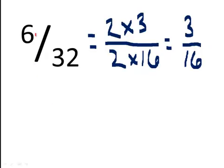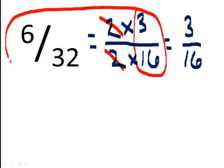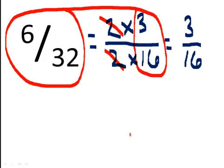Let's see how you did. We can factor 6 as 2 times 3, and we can factor 32 as 2 times 16. This 2 cancels with that 2, and that leaves us with 3 sixteenths left over. So 3 sixteenths and 6 thirty-seconds are equivalent fractions, and you would find them at the same place on the number line. If we did the long division — dividing 32 into 6, and dividing 16 into 3 — we'd get the same decimal number.